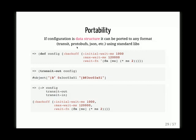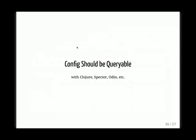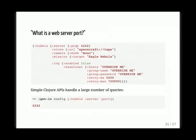Of course, configuration should be queryable — with Clojure, Specter, or any tools we have. Clojure is the first one to try if you have something simple. For example, when we need to answer the question 'which server port is our application listening on?' — instead of going to netstat, hunting for the PID of our application, we can just expose certain APIs. If our configuration is just a data structure, a one-liner will tell you exactly what port it listens to. You're not going to miss the PID or established connections — none of those messy things netstat gives you.